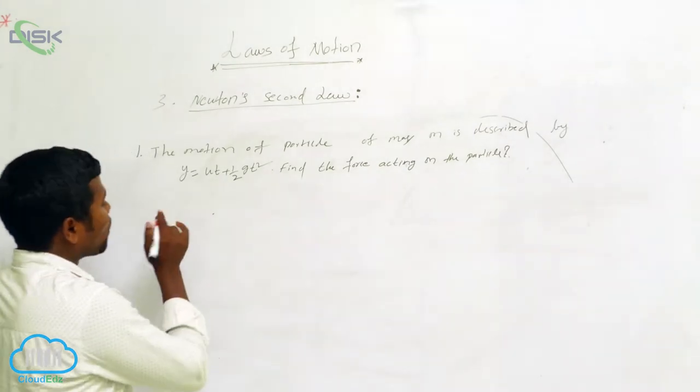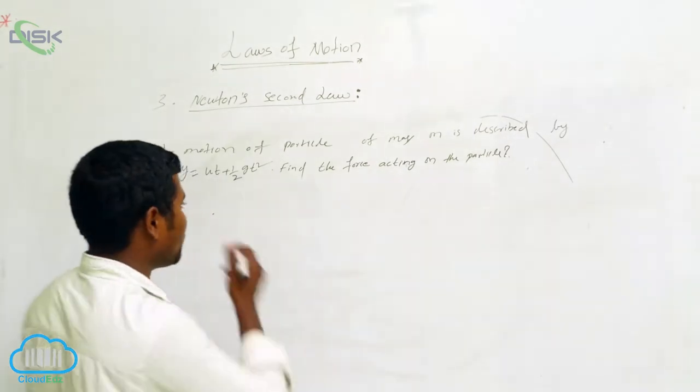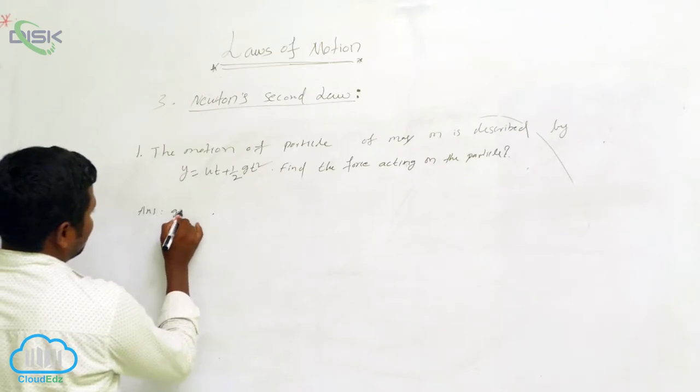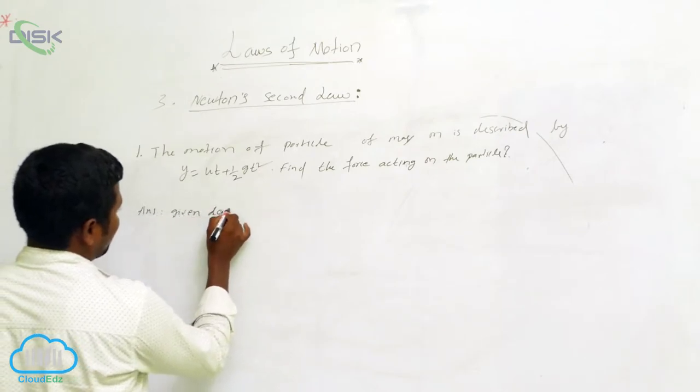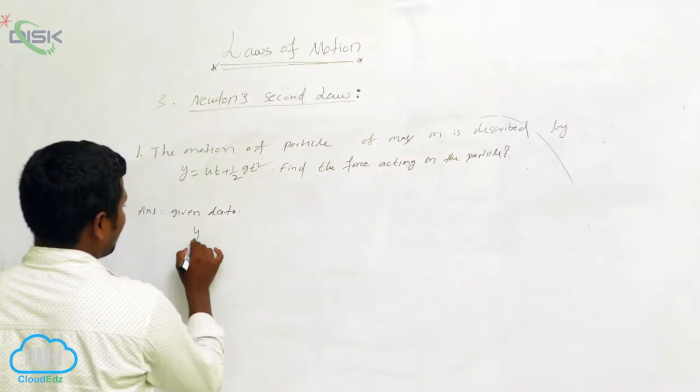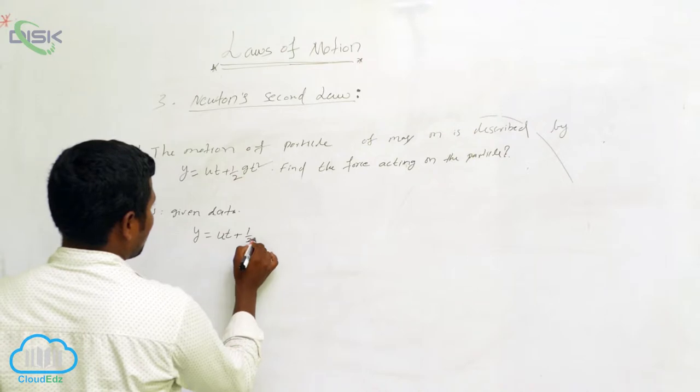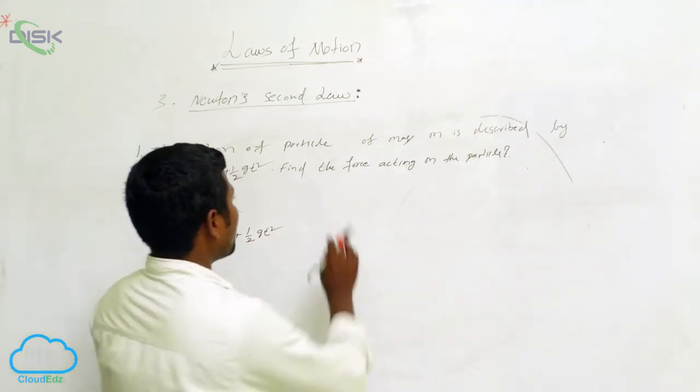First, this is the problem. As soon as given the problem, what you have to write? You write and share the given data. Given data: what is given? y equals ut plus gt squared.